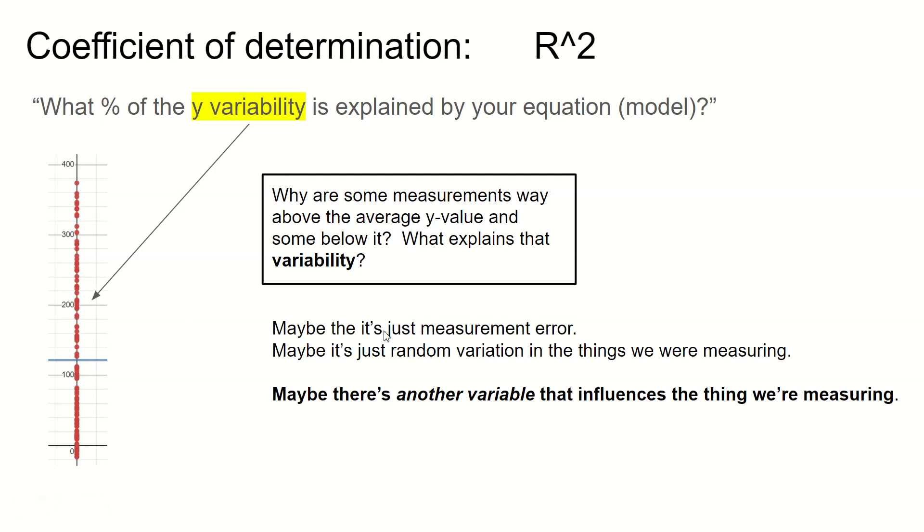And maybe that variability is just because of measurement error. You know, maybe all of these different observations in reality have the same Y value. It's just that I'm really bad at measuring them. And so each time I try and measure this Y value, sometimes my measurements are too large, sometimes too small. That happens. You know, some things are very difficult to measure. Or it could be that maybe it's just random variation in the thing that we're measuring, but there's no particular pattern. There's no other thing that would let us predict. It's just like the thing we're measuring just has random variation, but maybe there's another variable that influences the thing that we're measuring. And that's what our model would be useful for.